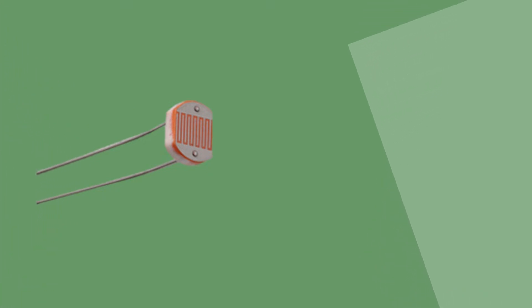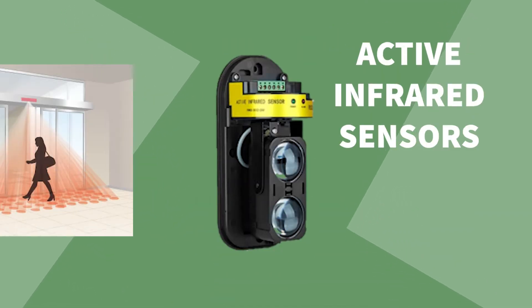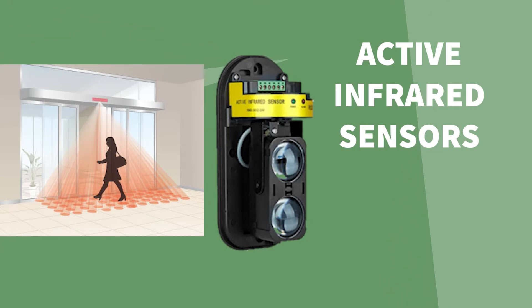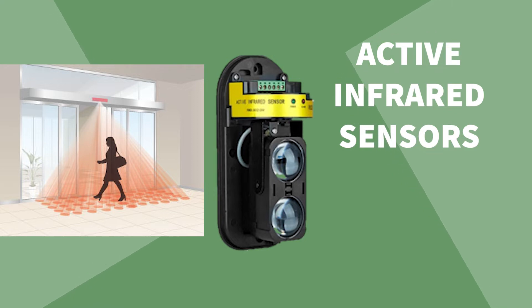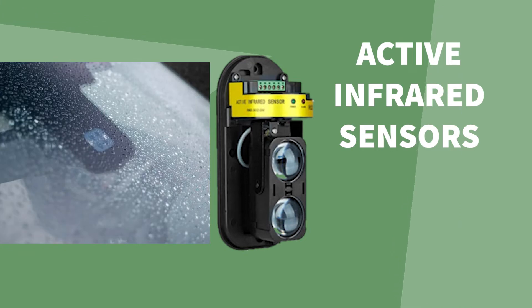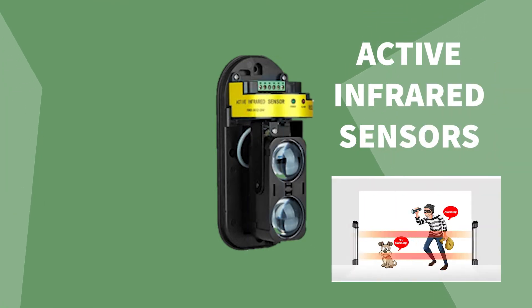Infrared sensors come in two types: active and passive. Active infrared sensors use invisible beams of infrared radiation. If something gets in the way of the beam's path, it breaks the beam, which gets detected by the system as less infrared will be received. Active infrared is used to turn on windscreen wipers automatically when rain is detected, and for setting off security alarms when an intruder breaks an infrared beam.